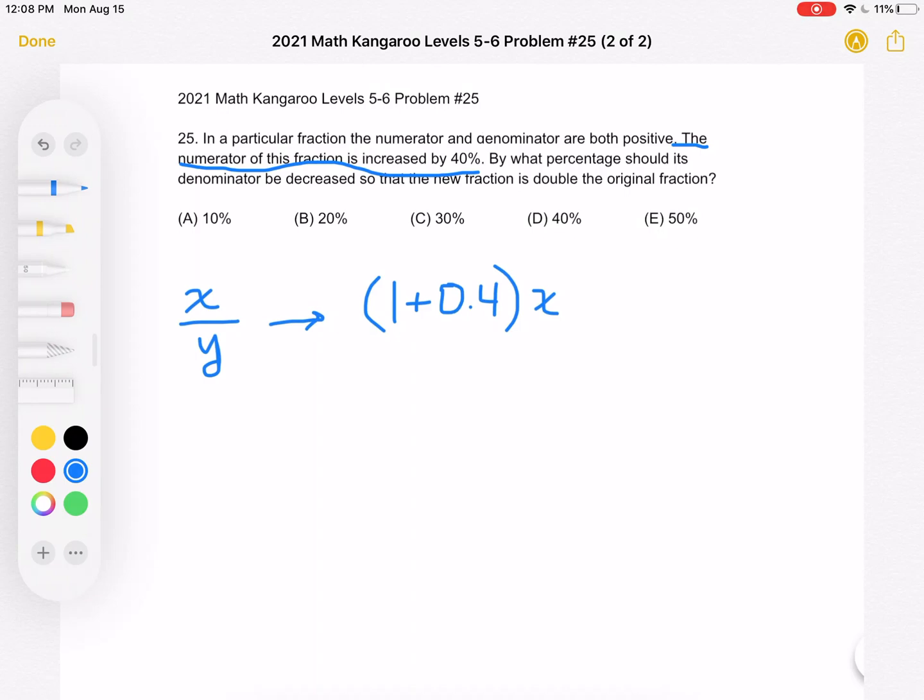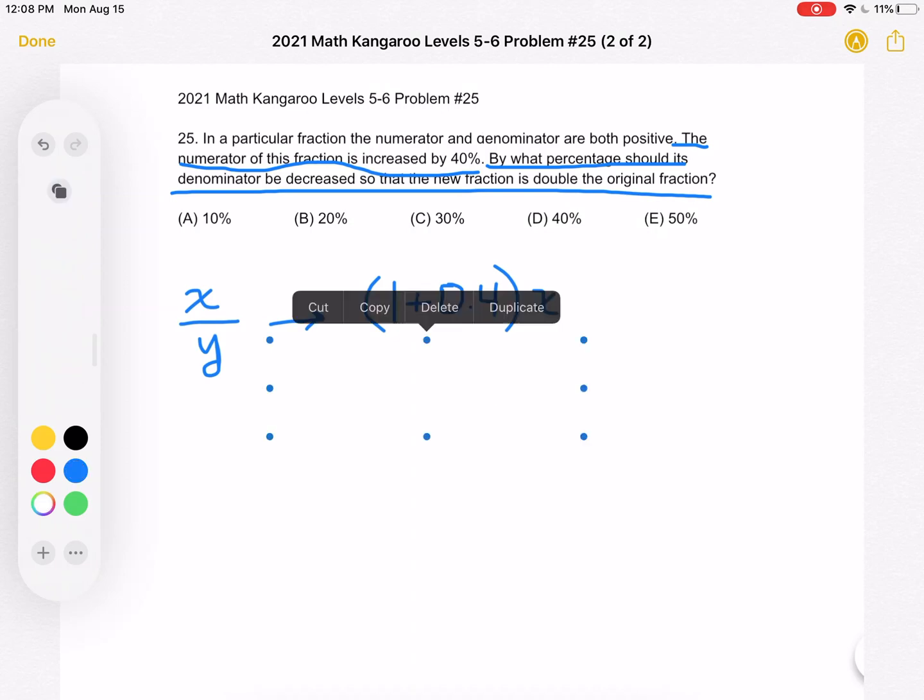And what we're trying to figure out is by what percentage should its denominator be decreased so that the new fraction is double the original fraction. So on the bottom, we're decreasing. So we have 1 minus question mark. We're trying to figure out what the question mark is times y.